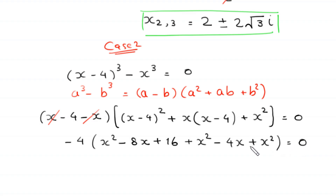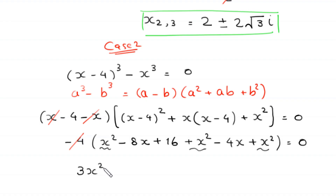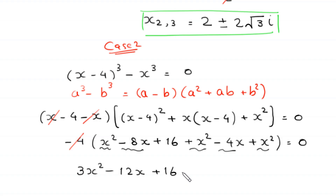The negative x cancels with positive x, leaving negative 4. Dividing both sides by negative 4, and expanding: (x minus 4) squared becomes x squared minus 8x plus 16, plus x squared minus 4x, plus x squared. So we get 3x squared minus 12x plus 16 is equal to 0.